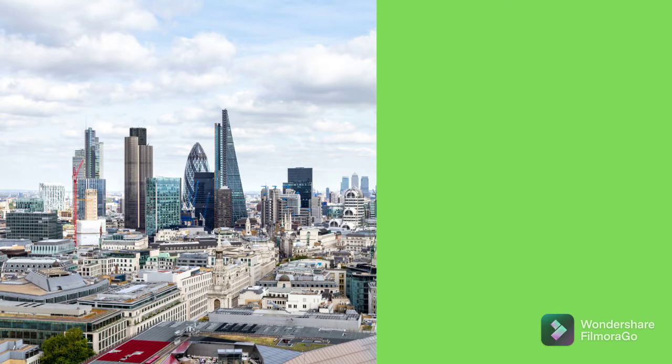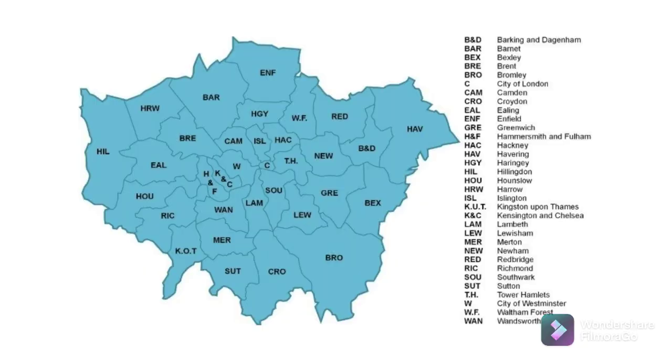Hello, welcome back to the channel. The UK's capital is London, which is divided into 32 borough councils, all within the Greater London Authority. The Greater London Authority is in charge of police, with the exception of the London City Council which has its own police.